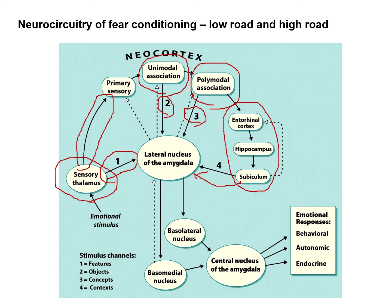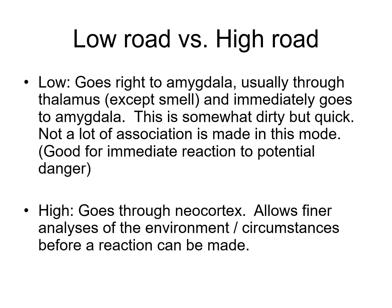Information from the lateral nucleus of the amygdala signals the basolateral nuclei and the basal medial nucleus, eventually reaching the central nucleus of the amygdala. The central nucleus then sends information to the periaqueductal gray and to the hypothalamus, which are responsible for the emotional responses — behavioral changes, endocrine changes, and autonomic changes in the nervous system.